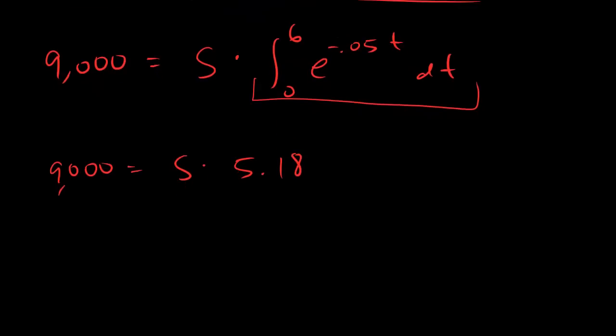All right, and now dudes, if you want to solve for S, it's easy. You just divide both sides by 5.18. 5.18, 5.18, and you get S equals something like 1,736 - that's the ugliest and fattest six I've ever seen - 6.23.